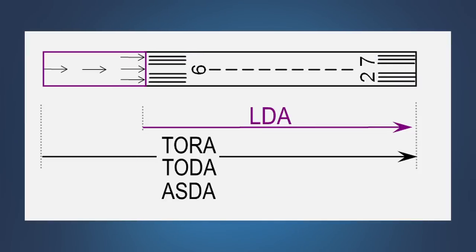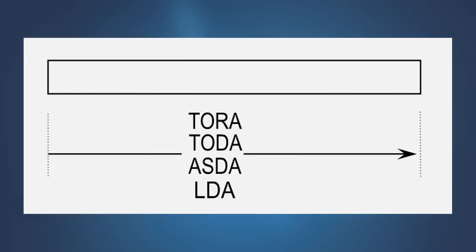Landing distance available is the runway length declared available and suitable for a landing airplane. The landing distance available may be less than the physical length of the runway or the length of the runway remaining beyond a displaced threshold if necessary to satisfy runway design standards. In most cases, a runway's declared distances equal the physical length of the runway or, in the case of the landing distance available, the length of a runway remaining beyond the displaced threshold.